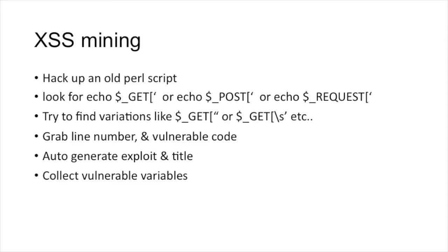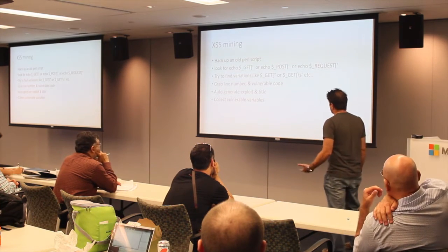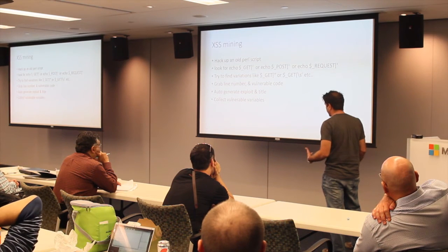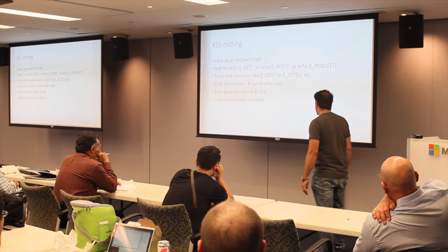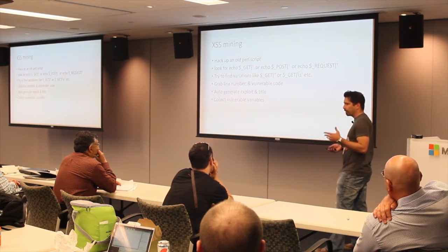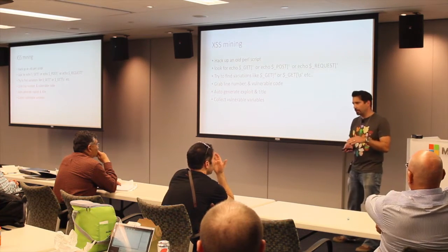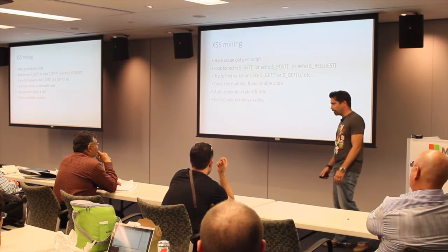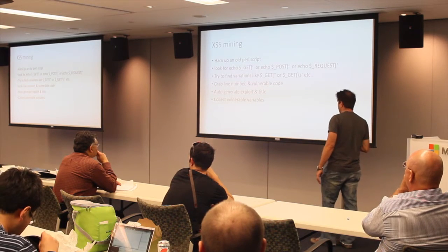The next step was how to mine all these plugins for cross-site scripting vulnerabilities. A couple of years ago I'd done similar research with RubyGems, so I took one of my old Perl scripts used to look at command injection in RubyGems and modified it to look for XSS in WordPress plugins. I set it up to look for echo GET, echo POST, echo REQUEST, and variations with single or double quotes. I also wanted to grab the line number and a snippet of the vulnerable code for advisories.